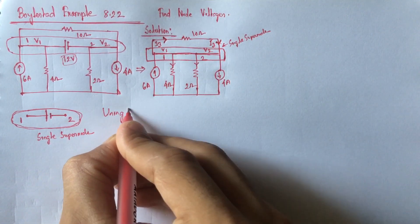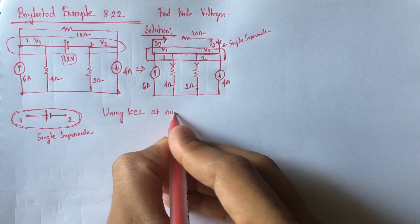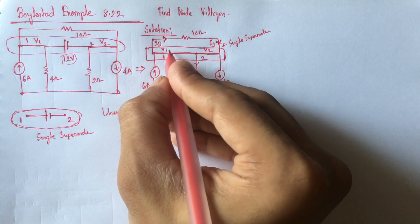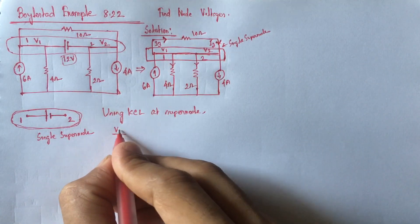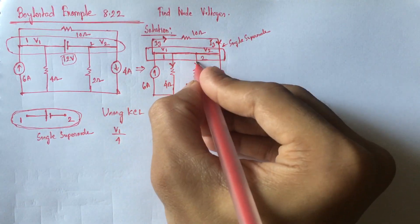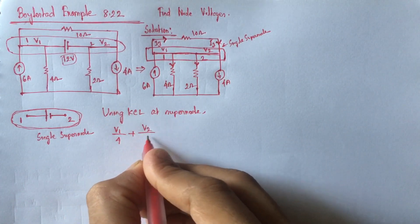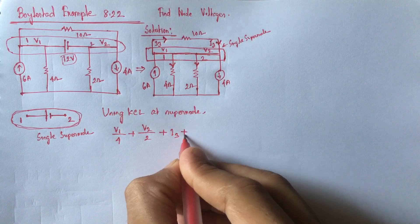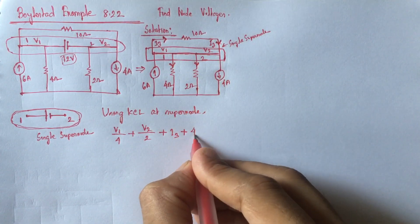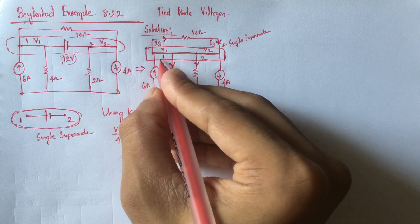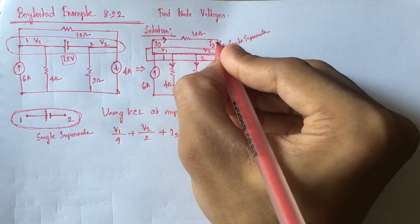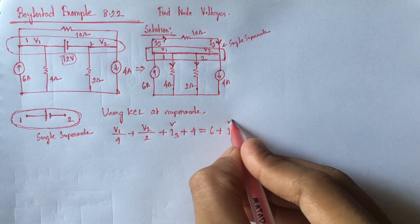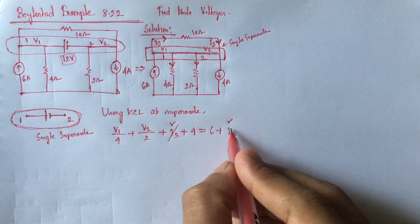It is clear that I3 current will appear twice in calculating Kirchhoff's current law at this super node. Using KCL at the super node, we get V1 over 4 — this current is going out — plus V2 over 2 — this current is also going out — plus I3 going out, plus 4 ampere going out, equals 6 ampere entering plus I3 entering. So I3 appears twice in this equation and will cancel each other.